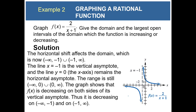The horizontal shift affects the domain, which is now negative infinity to negative one union negative one to infinity. The line x equals negative one is the vertical asymptote, and the line y equals zero remains the horizontal asymptote. The range is negative infinity to zero union zero to infinity. The graph shows f of x is decreasing on both sides of its vertical asymptote — decreasing from negative infinity to negative one and on negative one to infinity.